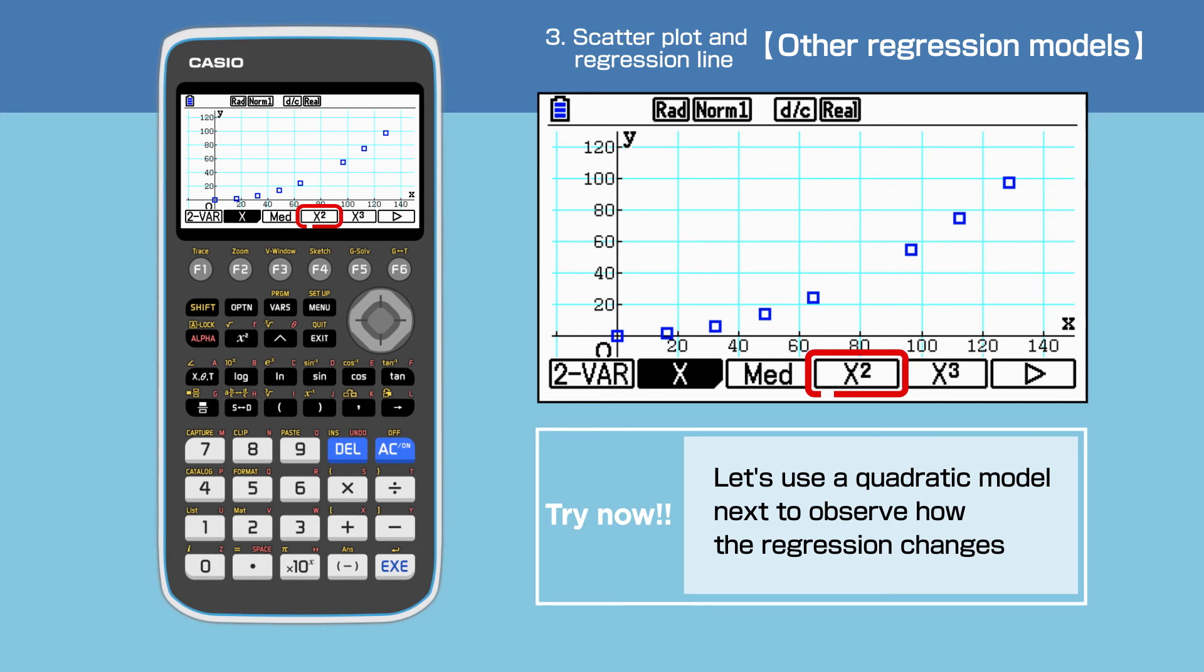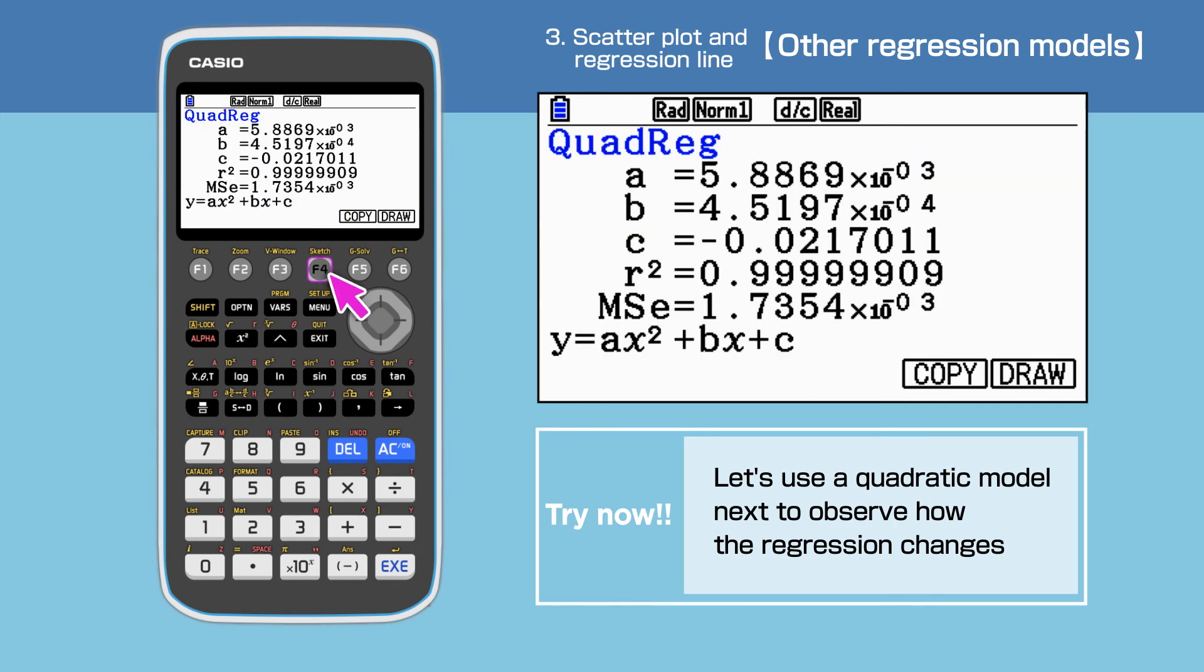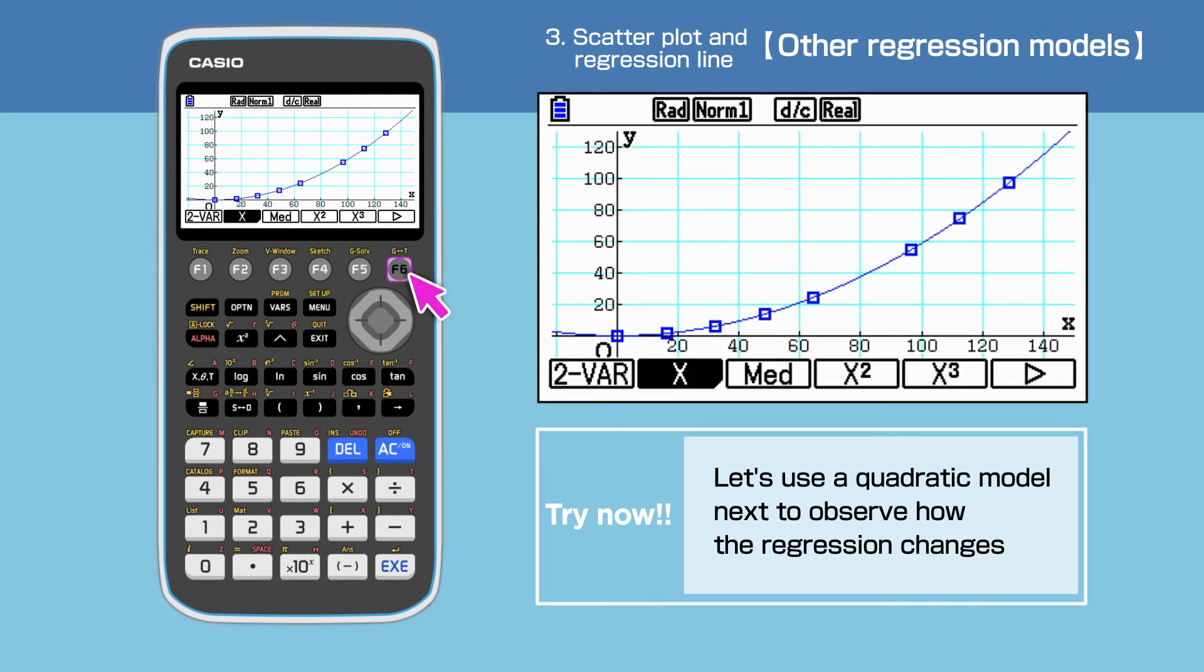Select a quadratic regression by pressing F4. The correlation determination for the quadratic model is 0.999, which is better than the linear model. Press F6 to draw this graph. The graph is drawn.